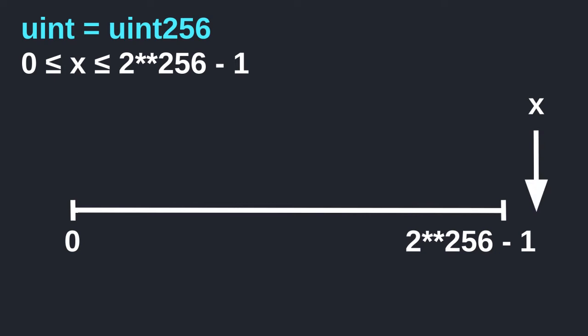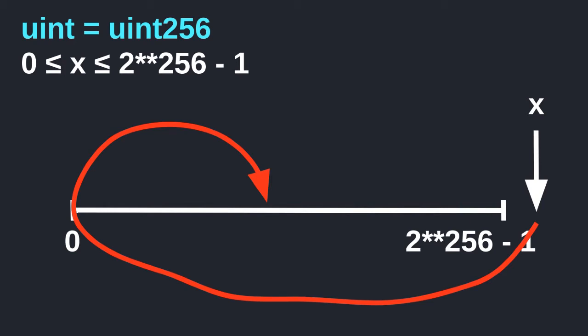Let's look at overflow. What happens when a number is greater than 2 to the 256 minus 1? Over here on the right we have x, which is beyond the maximum range. Solidity handles this by wrapping around and starting to count forward from 0. For example, if x is 3 greater than the maximum range, then 1 beyond the maximum gets back to 0, 2 beyond lands at 1, and 3 beyond lands at 2. So if the number is 3 plus the maximum number, it wraps around and we end up at 2. This is overflow.